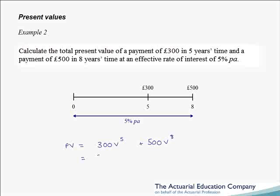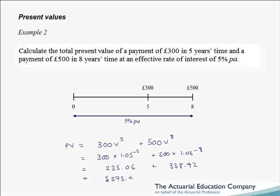At 5%, v^5 can be written as 1 over 1.05^5, or 1.05 to the minus 5. Similarly, v^8 can be written as 1 over 1.05^8, or 1.05 to the minus 8. Putting that into our calculator, the first term is 235 pounds and 6 pence, and the second term is 338 pounds 42 pence, giving a total present value of 573 pounds 48.